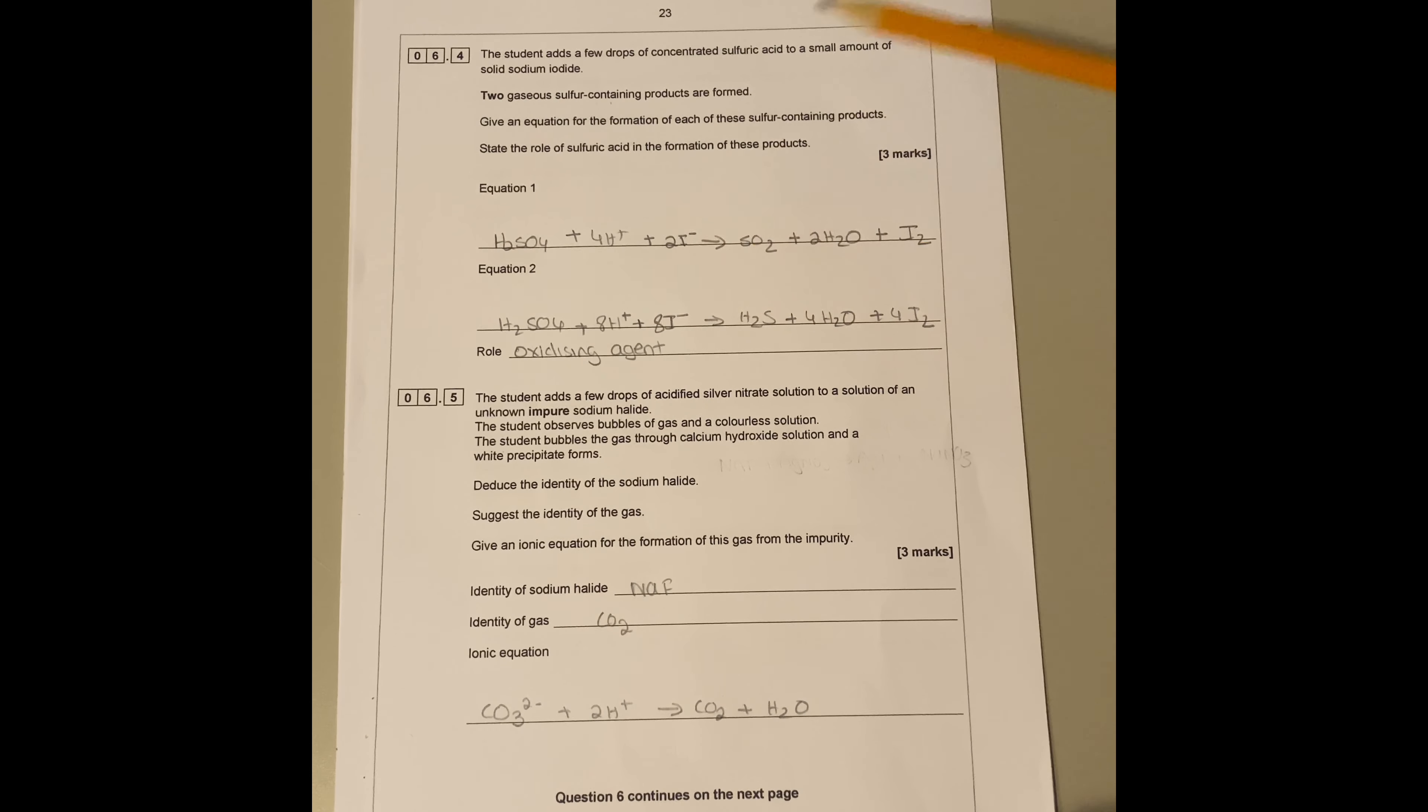This is H2SO4 goes to H2S, those are the two products formed. You balance the equations again, that's four oxygens so you need four waters to balance it off. Then you add eight H plus because there's eight H plus here. Then you have the iodine here, four times two is eight, so you add eight I minus. What's the role of sulfuric acid? Sulfuric acid is an oxidizing agent because it gets reduced itself.